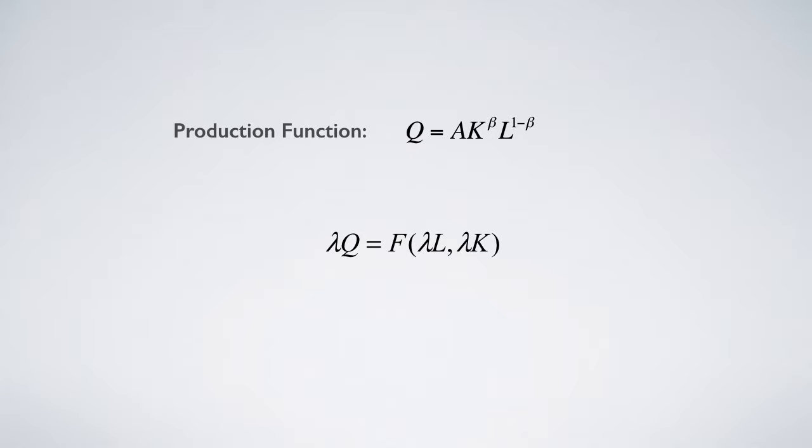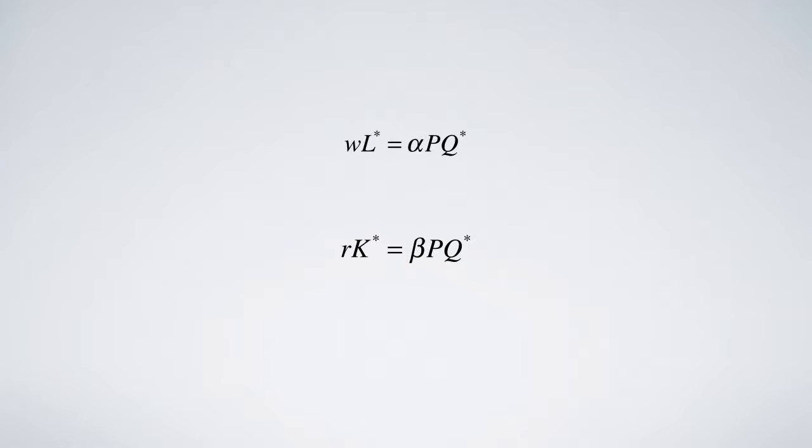But there is still another problem. Since the labor share of income is alpha, or the capital share beta, the total share of income is alpha plus beta. If alpha equals 1 minus beta, labor and capital take away the whole income. There is no profit.